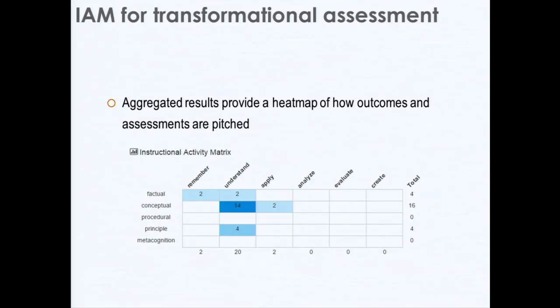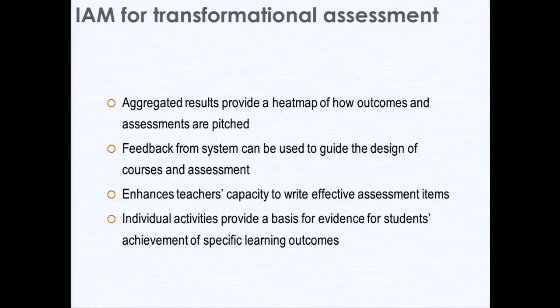The idea behind all of this — and this is some actual example real output from the system — is that if you take a unit outline, course outline, or a large piece of assessment and run it through the system, you'll be able to see through a heat map where that assessment is pitched. Is it pitched at understanding? Is it pitched at analysing? A reasonably lower order assessment would be dealing with facts and understanding, conceptual knowledge and principles, but really at the remember, understand, and apply level. That will allow a teacher to know whether, given the national curriculum and the learning outcomes set by the government, they are achieving that. With these aggregated results, you get feedback to guide the design of courses and assessment — it's meant to enhance teachers' capacity to write effective assessment outlines.